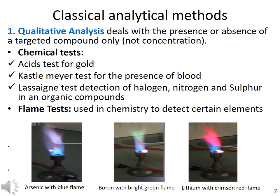Along with chemical tests, there is another qualitative test — the flame test — used to detect a certain class of compound. As shown here, three characteristic flames correspond to three different elements. If you perform a flame test of arsenic, it gives a blue flame. Boron burns with a bright green flame. Lithium, when burned, gives a crimson red flame, indicating the presence of lithium in your sample. These qualitative tests are routinely performed in chemistry labs for identification of different elements.